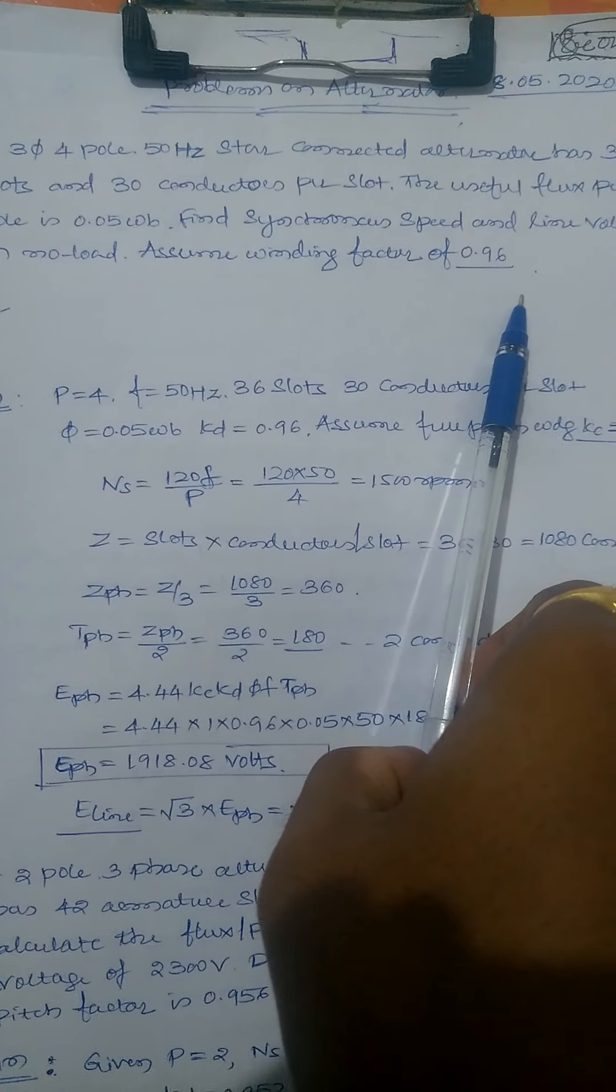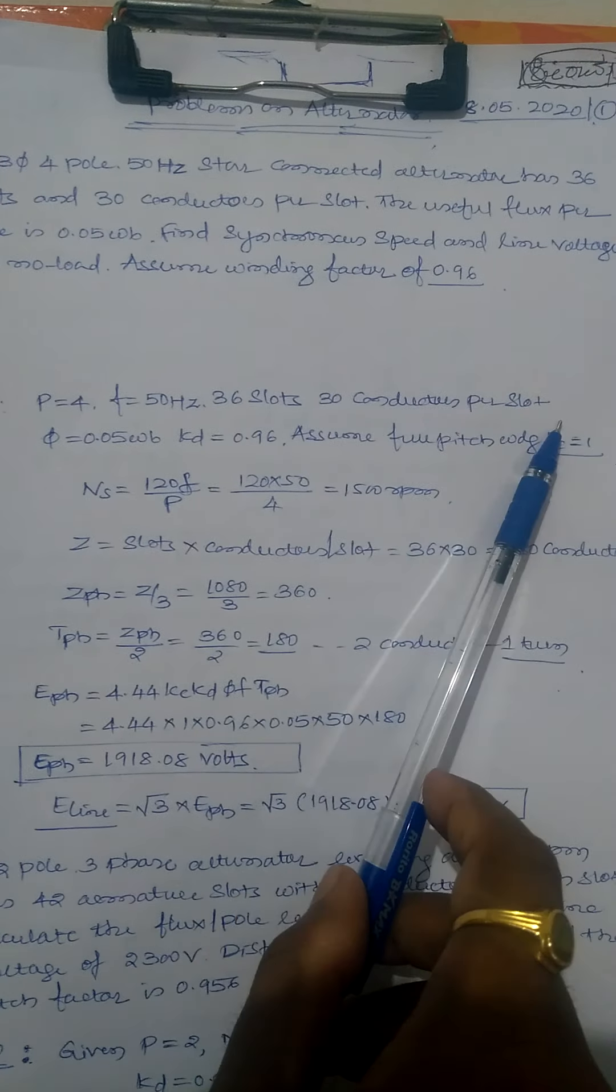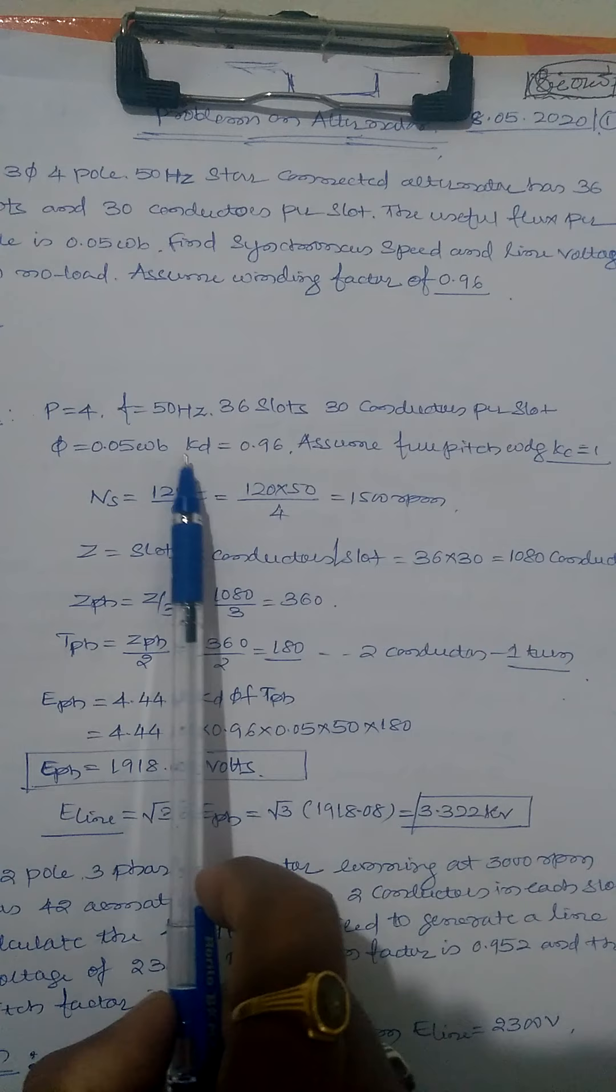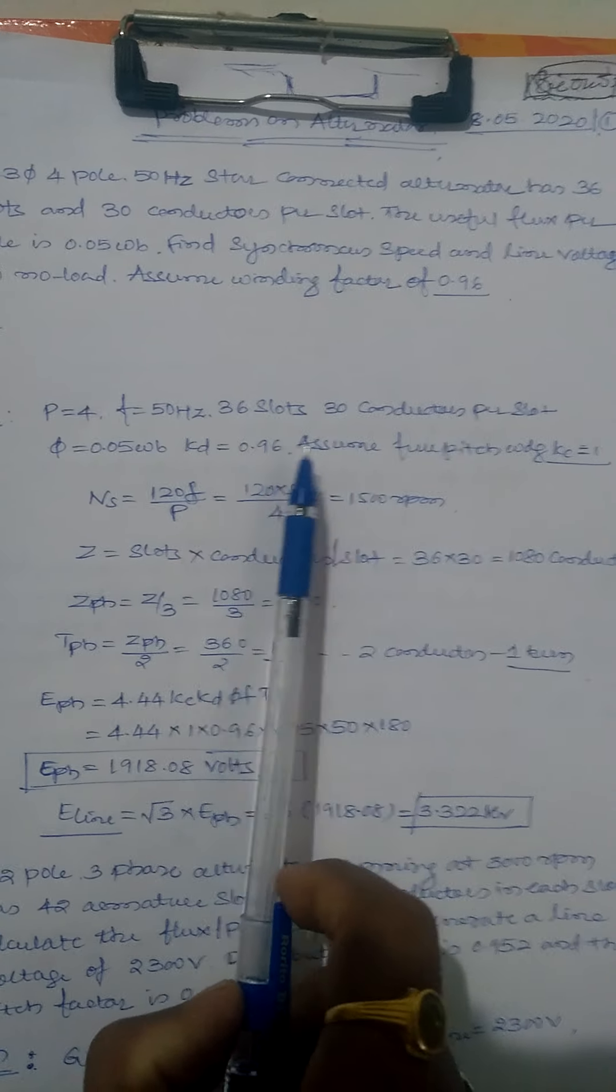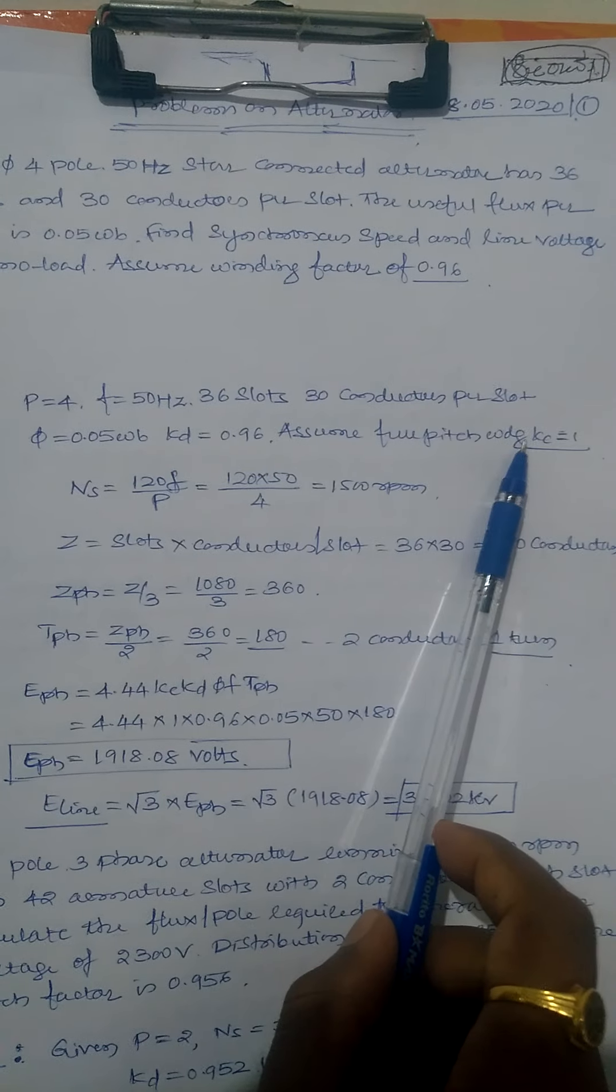Find the synchronous speed and line voltage on no load. Assume winding factor is 0.96. Given: P equals 4, F equals 50, 36 slots, 30 conductors per slot, flux is 0.05, KD is 0.96. Since the full pitch winding case is not given, assume KC equals 1.